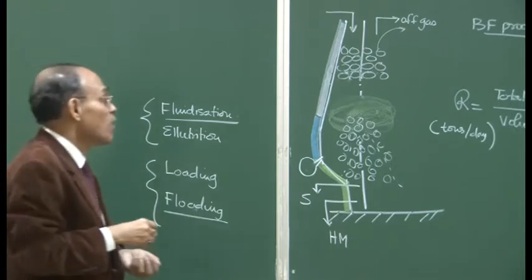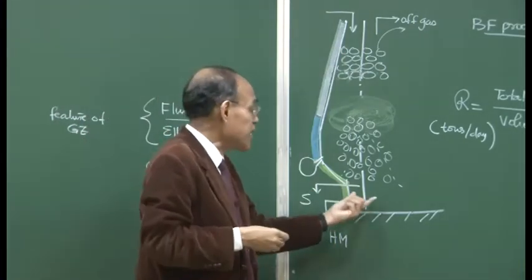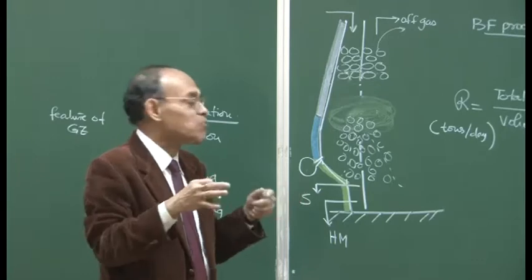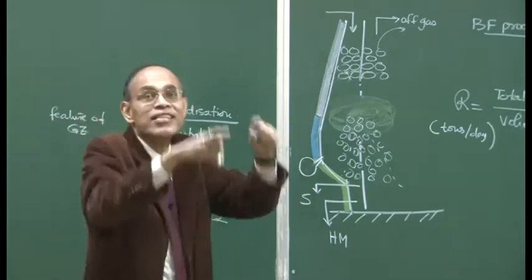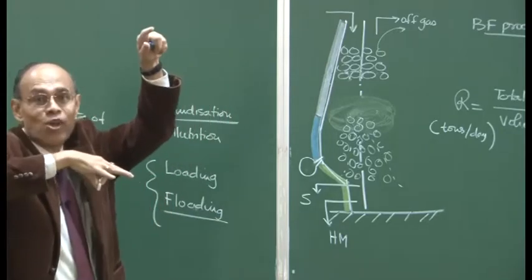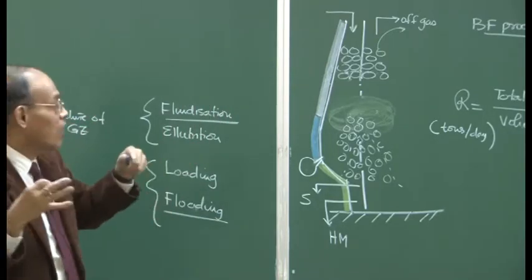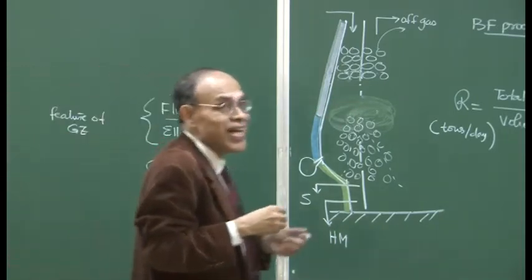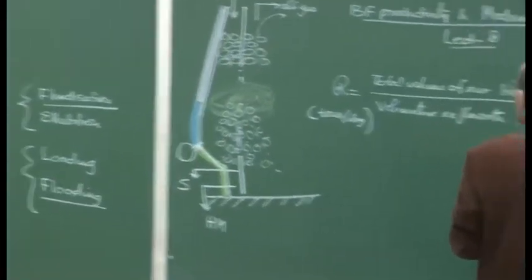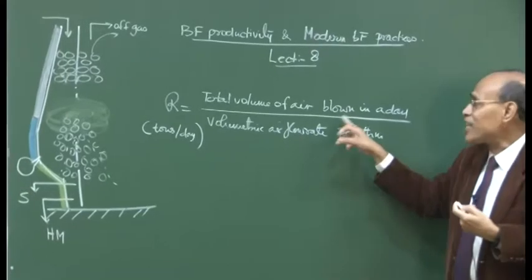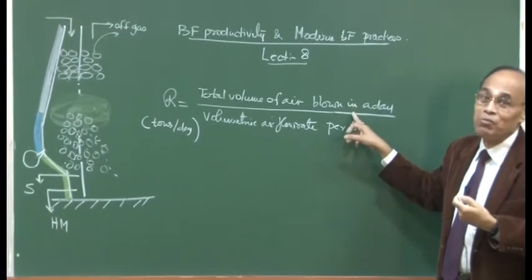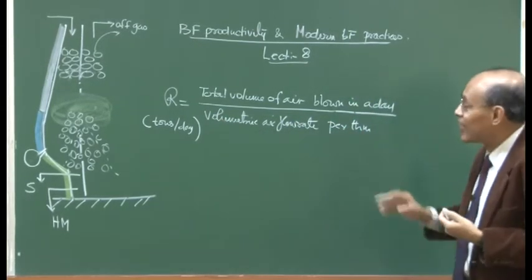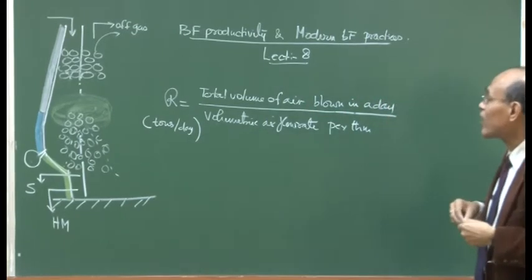When no burden material flows down and nothing accumulates, we call the phenomenon the hanging of the blast furnace — nothing is charging, nothing flows out, something has gone terribly wrong inside. This preliminary discussion tells you that beyond a certain volume, the gas flow rate cannot be increased due to the danger of fluidization, elutriation, loading, and flooding phenomena, leading to stoppage of iron production or hanging of the blast furnace.